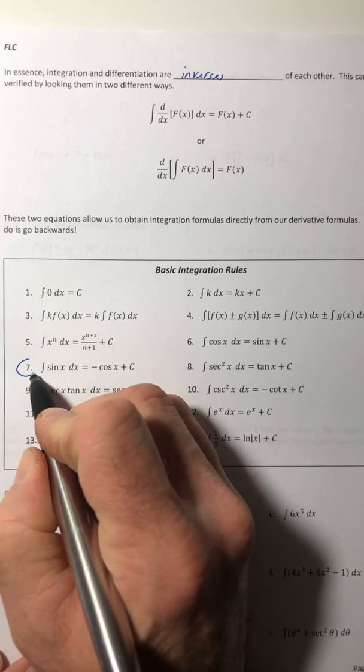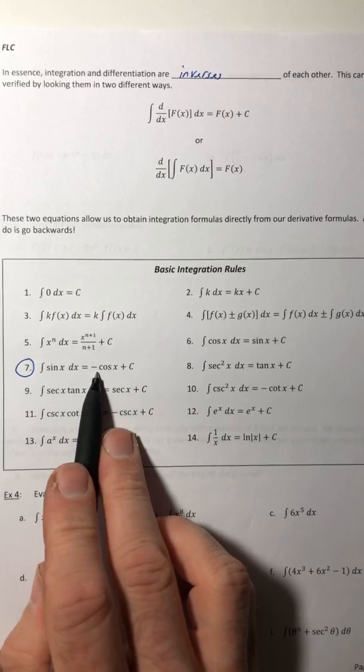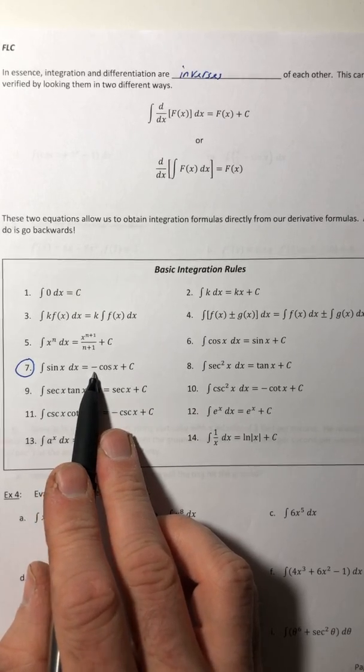That would be number seven. The integral of sine is negative cosine. And what people want to do is they want to leave the negative off. So just watch out for that.